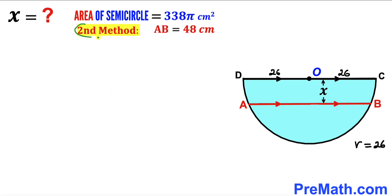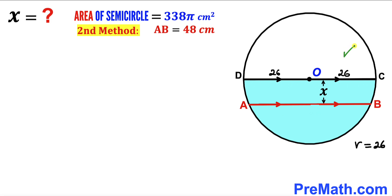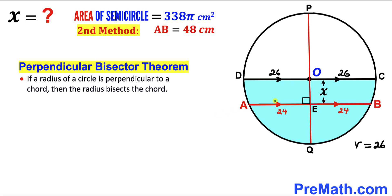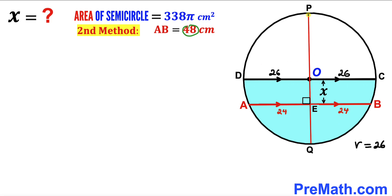Now for the second method, I have drawn the whole circle with center O and radius 26. I have dropped perpendicular PQ passing through center O. By the perpendicular bisector theorem, this radius bisects chord AB into two equal parts of 24 cm each. Radii PO and OQ are both 26 cm.